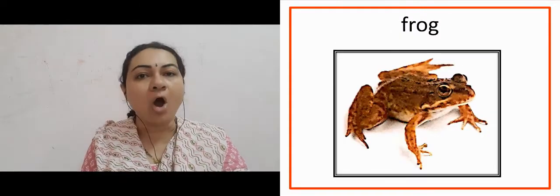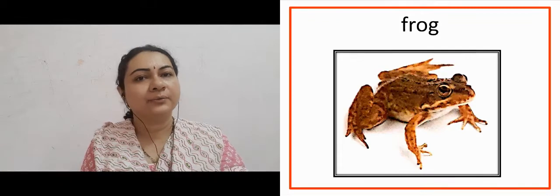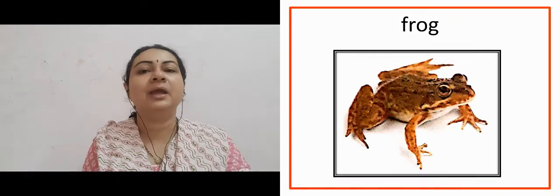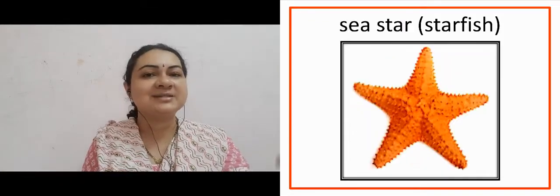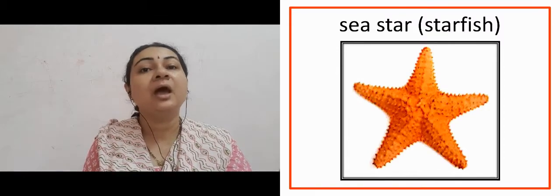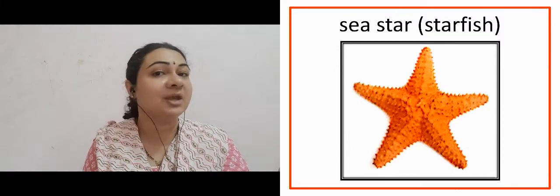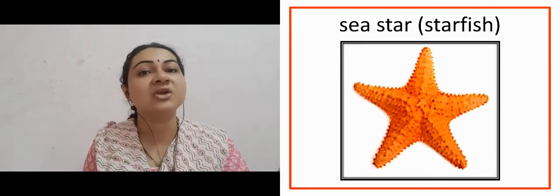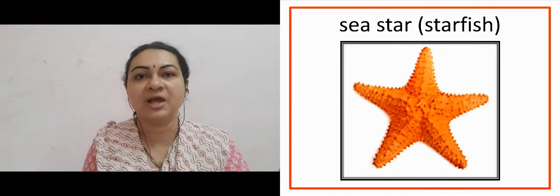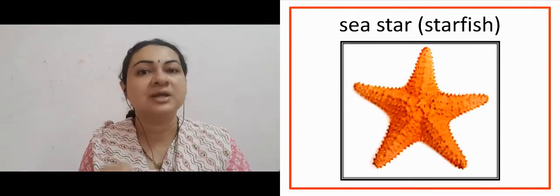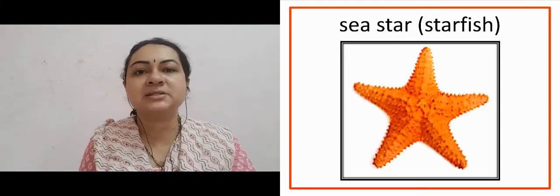Now the next slide — this is frog. Frog. It is also an aquatic animal. Now the next slide — this is starfish. Dekho uska shape kaisa hai — star shape ka fish hai, is liye hum isko starfish ya sea star kehte hain.